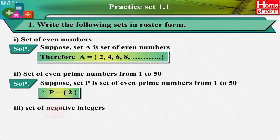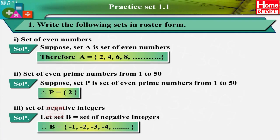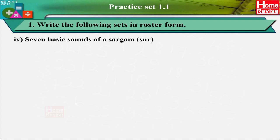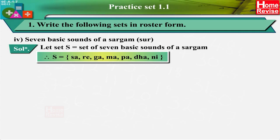(3) Set of negative integers: Let B = set of negative integers, therefore B = {−1, −2, −3, −4, ...}. (4) Seven basic sounds of a sargam (sur): Let S = set of seven basic sounds of a sargam, therefore S = {Sa, Re, Ga, Ma, Pa, Dha, Ni}.